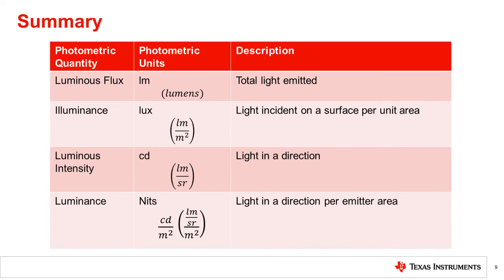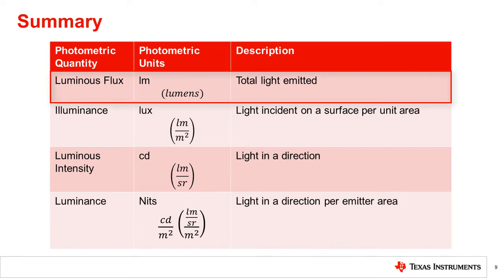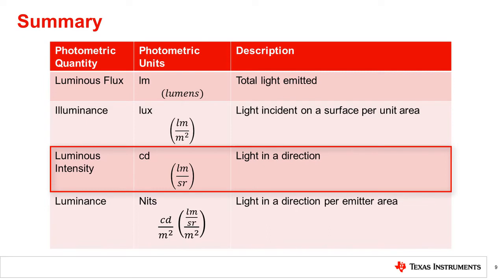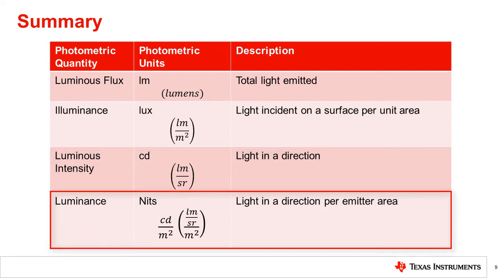Here we summarize all quantities seen so far. Luminous flux is measured in lumens and describes the total light emitted. Illuminance is measured in lux and describes the light incident on a surface per unit area. Luminous intensity is measured in candelas and describes light in a direction, with units of lumens per steradian. Luminance is measured in nits and describes light in a direction per emitter area.